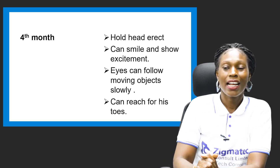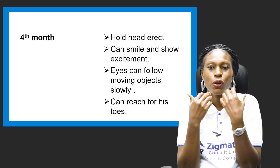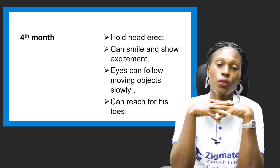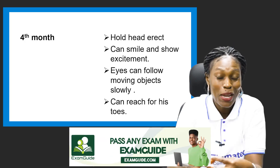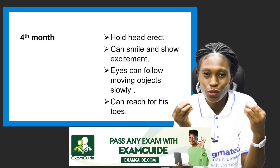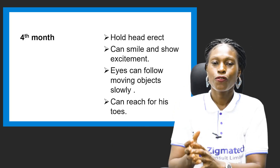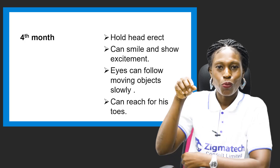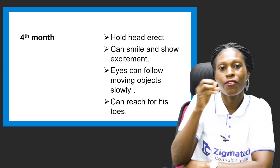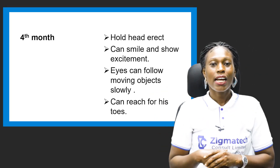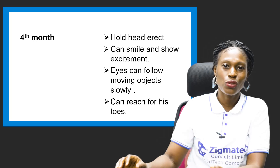At the fourth month, they can hold their head erect — you don't have to support it anymore. They can smile and show excitement when you play with them. Their eyes can follow moving objects slowly. Some parents move objects back and forth and the baby follows along. They can also reach for their toes and bring them close toward their mouths at four months.